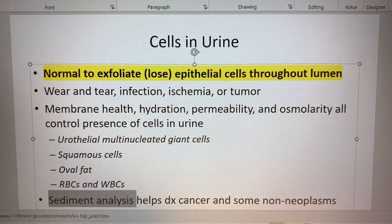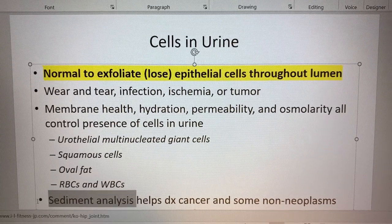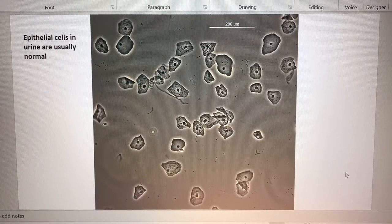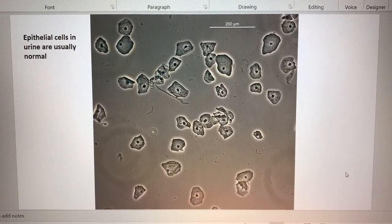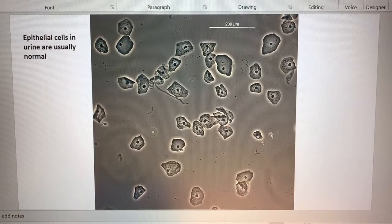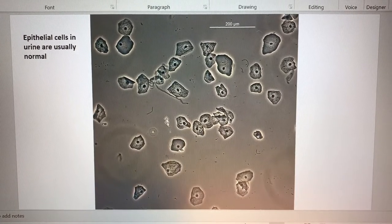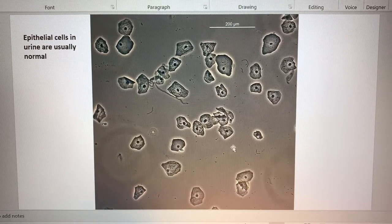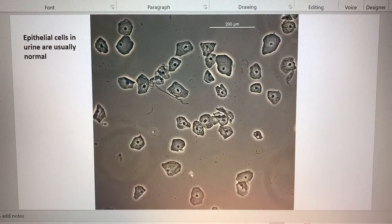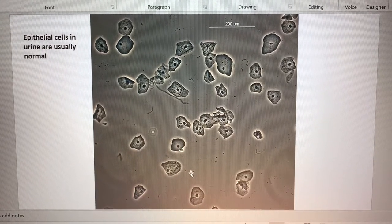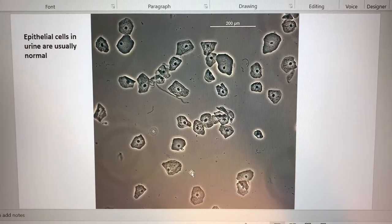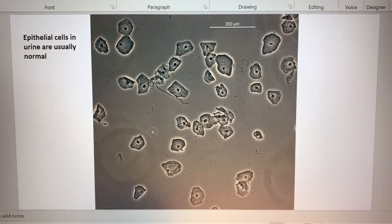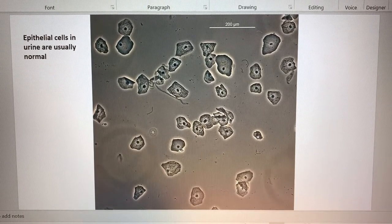We would do a sediment analysis to diagnose some cancers, etc. Let's note what the epithelial cells would look like in the urine. You can see here they look just like your average skin cell that you would look at under a microscope - those little flattened squamous cells we're used to seeing. That's fairly normal presentation, but we always have to rule out the abnormal.